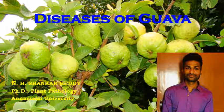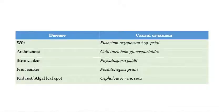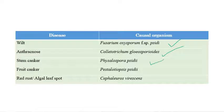Now we will see the list of important diseases in gourd. My name is N.H. Shankar Reddy and I am doing a PhD in plant pathology at Annamalai University. The important diseases of gourd include wilt caused by Phytophthora sp., anthracnose caused by Colletotrichum gloeosporioides, stem canker, fruit canker caused by Pestalotiopsis sp., red rust, and algal leaf spot caused by Cephaleuros virescens.